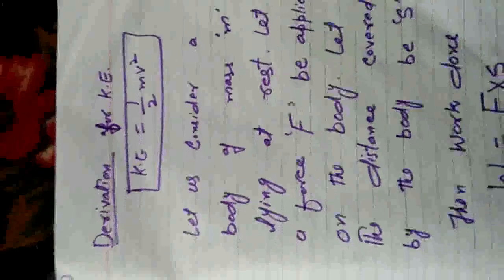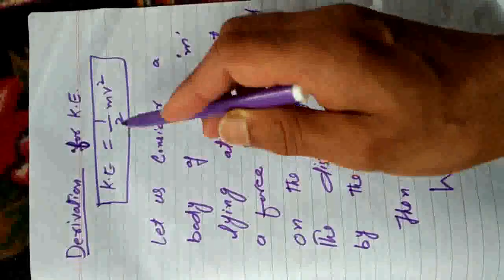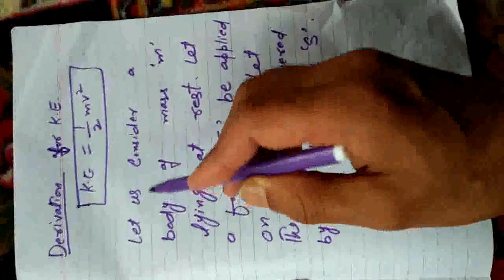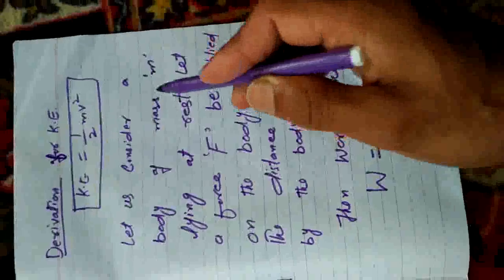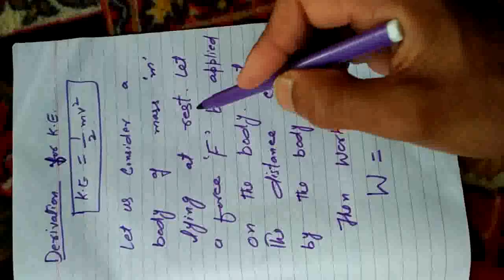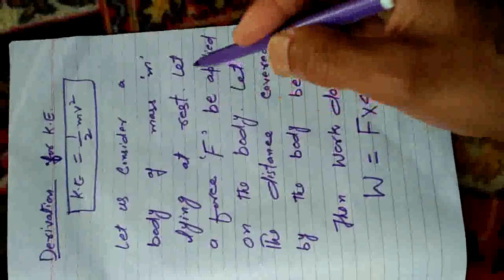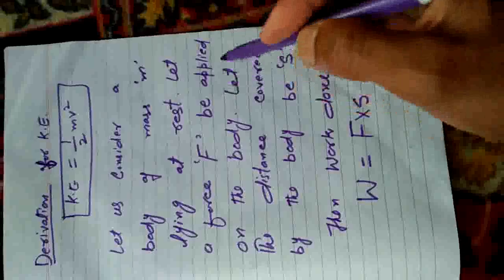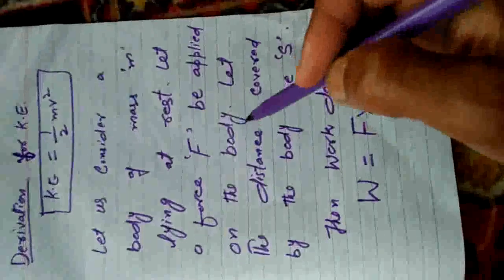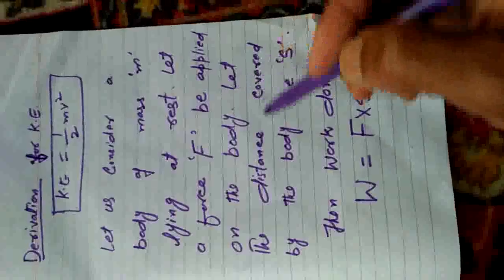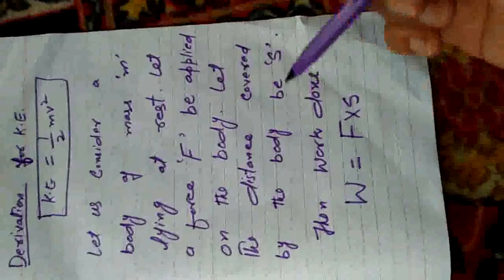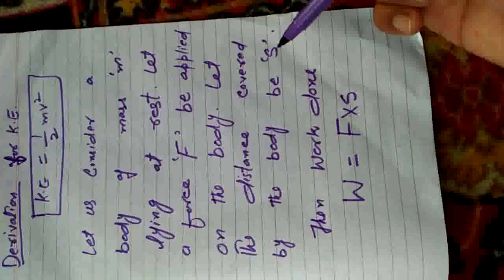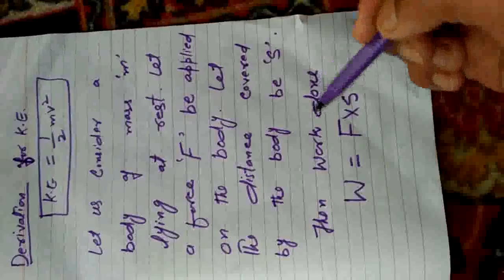Ab hum derive karenge yeh formula — kinetic energy equal to half of mv squared. Derivation for kinetic energy: let us consider a body of mass m lying at rest initially. Let a force F be applied on the body, and let the distance covered by the body be s.